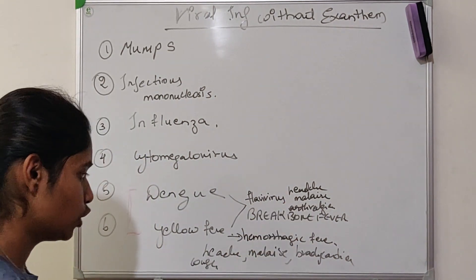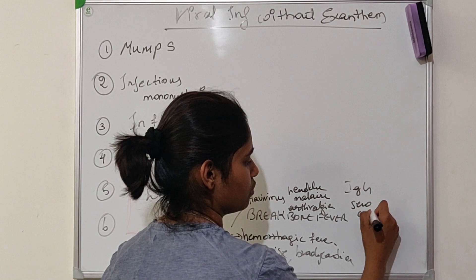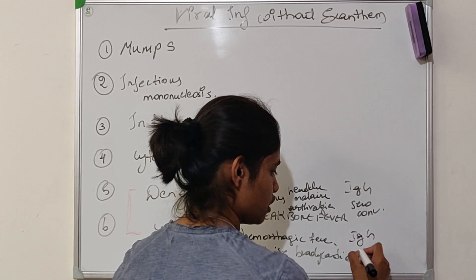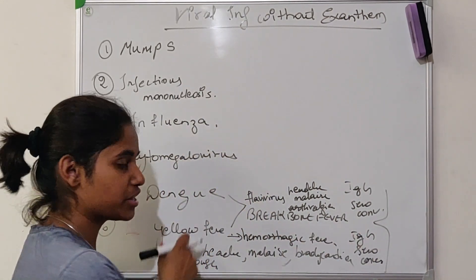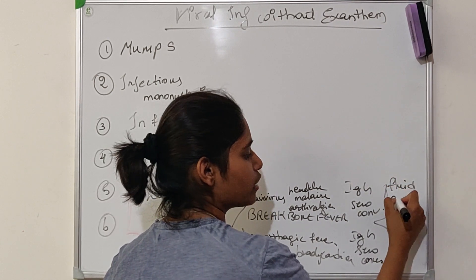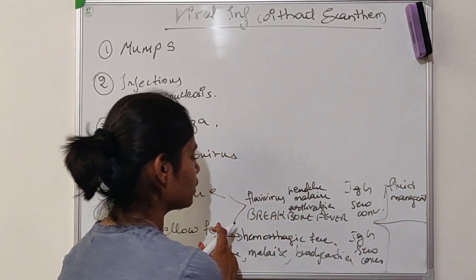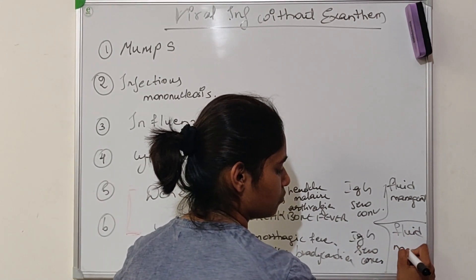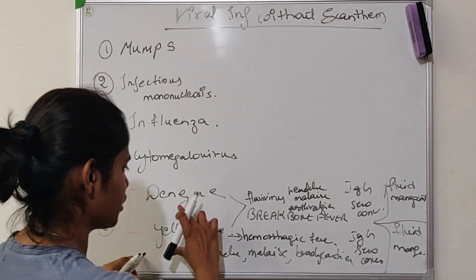How will you diagnose them? You will see IgG seroconversion for dengue, and the same for yellow fever — IgG seroconversion. The treatment for dengue is fluid replacement; fluid management is important, and treatment will be symptomatic. For yellow fever as well, fluid management is the treatment. So to finish dengue and yellow fever: the causative agent is Flavivirus.